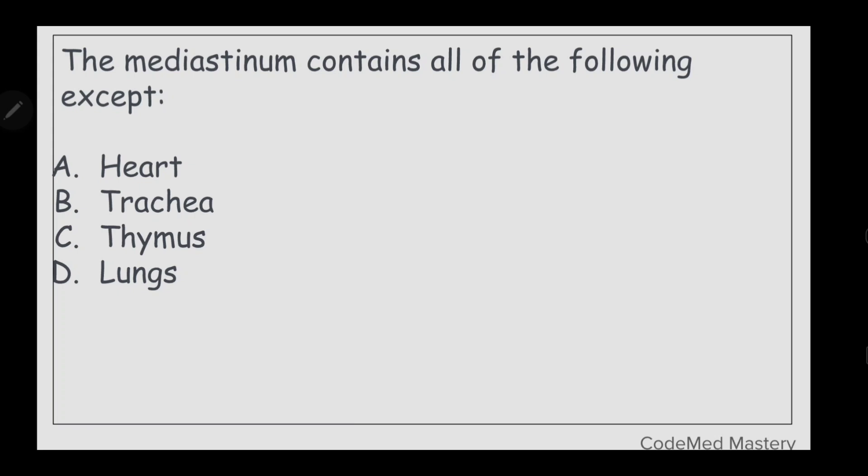Next question: the mediastinum contains all of the following except — option A: heart, option B: trachea, option C: thymus, option D: lungs. The right answer is option D, lungs.